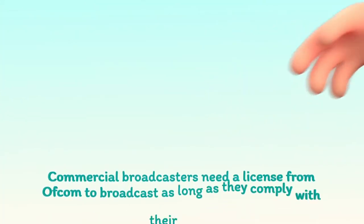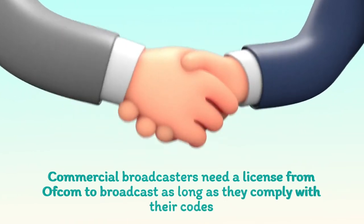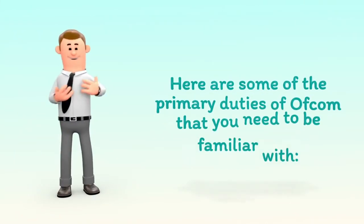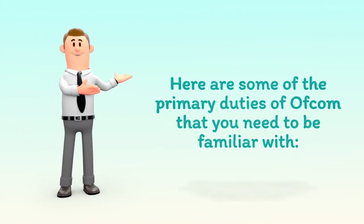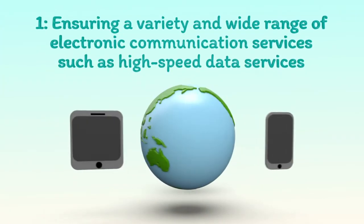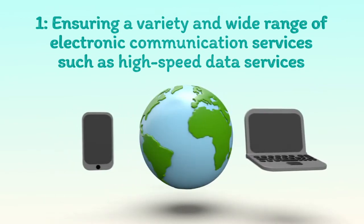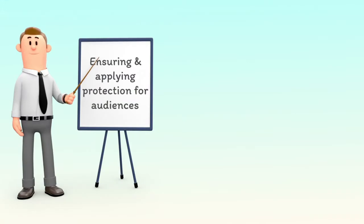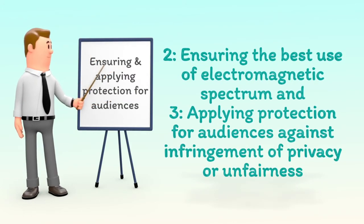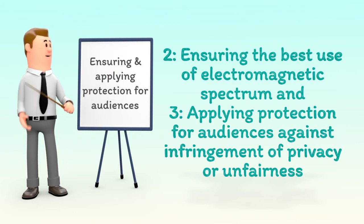Commercial broadcasters need a license from Ofcom to broadcast as long as they comply with their codes. Here are some of the primary duties of Ofcom: 1. Ensuring a variety and wide range of electronic communication services such as high-speed data services. 2. Ensuring the best use of electromagnetic spectrum. 3. Applying protection for audiences against infringement of privacy or unfairness.